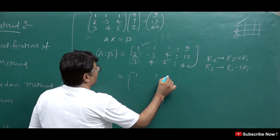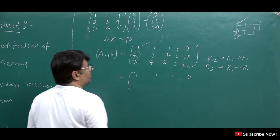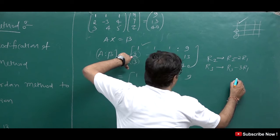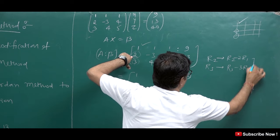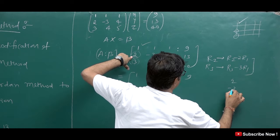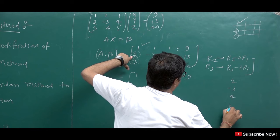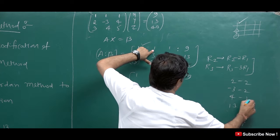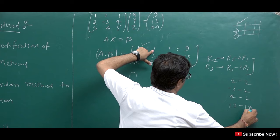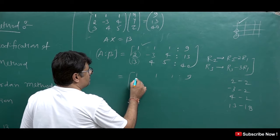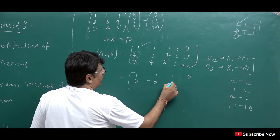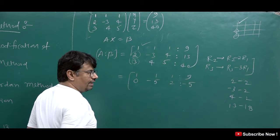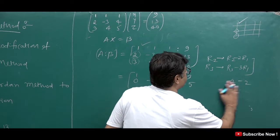After applying R2 minus 2R1: row 1 stays as 1, 1, 1, 9. For R2: 2 - 2×1 = 0; -3 - 2×1 = -5; 4 - 2×1 = 2; and 13 - 2×9 = -5. So R2 becomes [0, -5, 2, -5]. For R3 applying R3 minus 3R1: 3-3=0; 4-3=1; 5-3=2; and 40-27=13. So R3 becomes [0, 1, 2, 13].